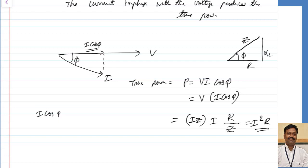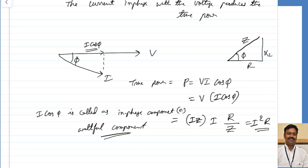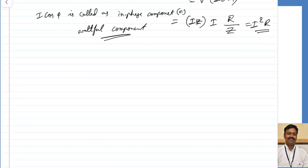I·cos φ is called the in-phase component or wattful component — the component responsible for production of power. The third type of power is called reactive power.